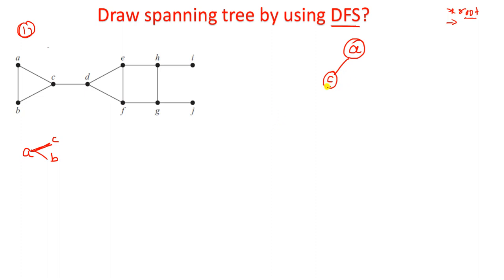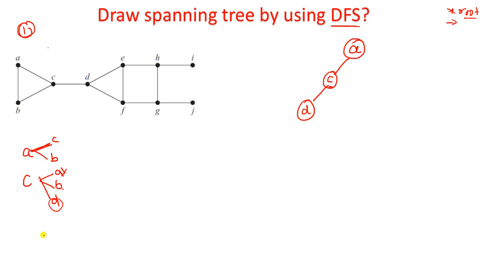Now I am at C. Explore C - what are the vertices incident with C? C has A, B, and D. A is already visited so we eliminate it. The remaining ones are B and D. Among B and D you can take any one, but here I choose D.